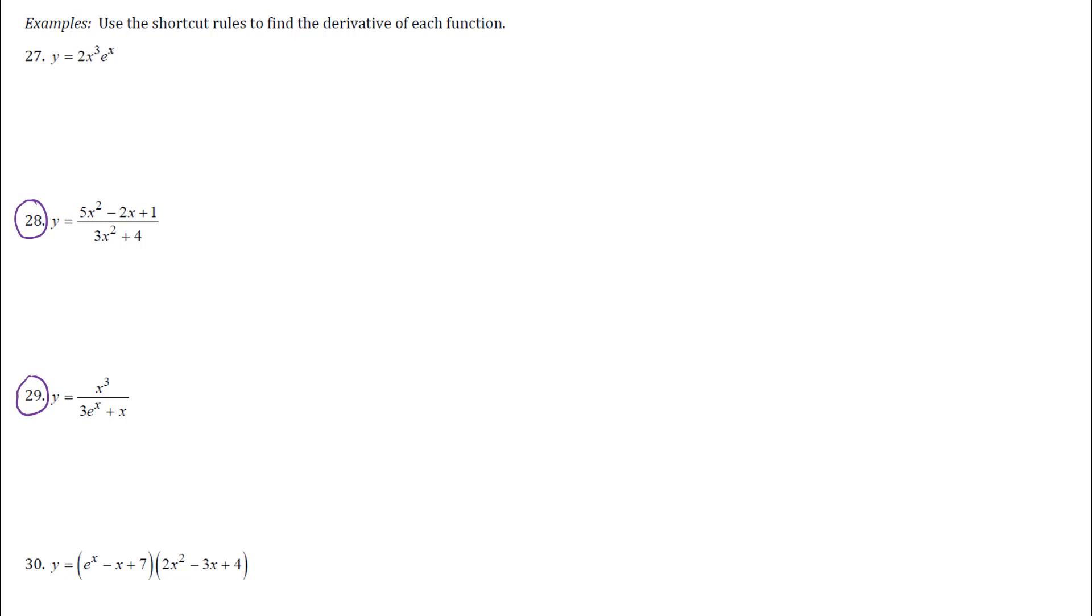When we looked at how quotient rule was written we had f of x over g of x and we were wanting to differentiate that with respect to x. So variables in both the numerator and denominator.